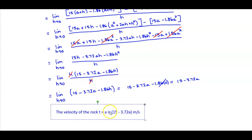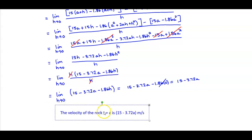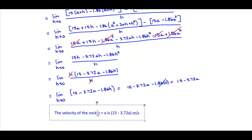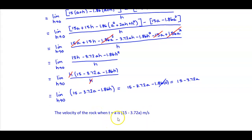Since plugging in h equals 0 eliminates the last term, we get 15 minus 3.72a. Therefore, the velocity of the rock when t is equal to a is 15 minus 3.72a meters per second.